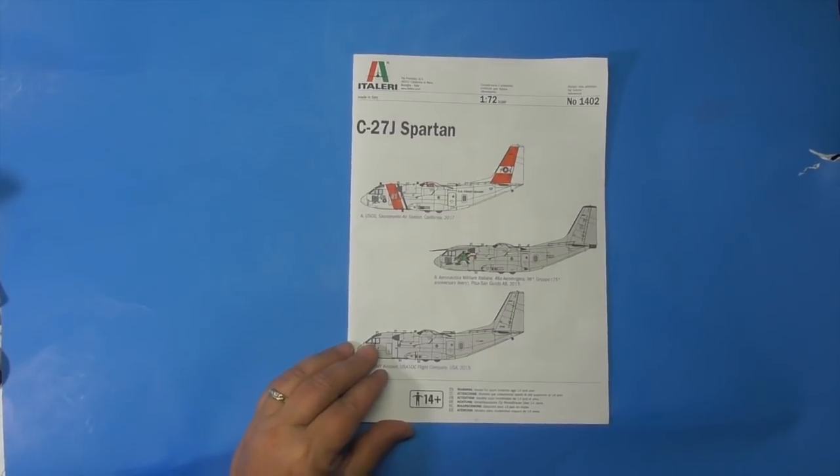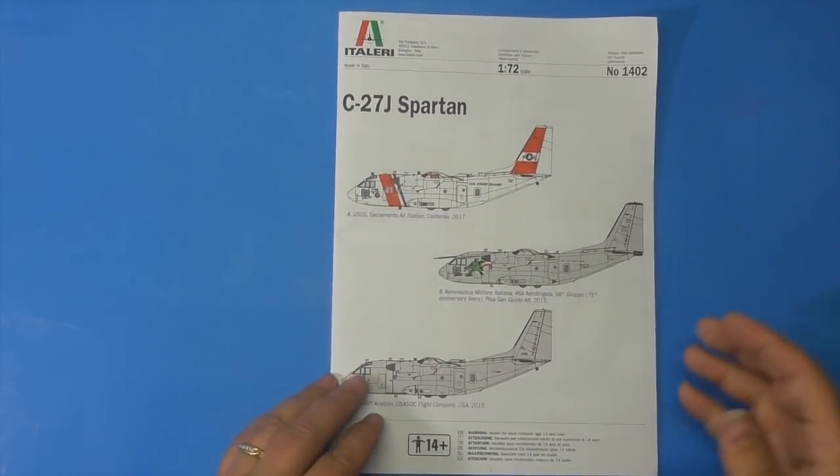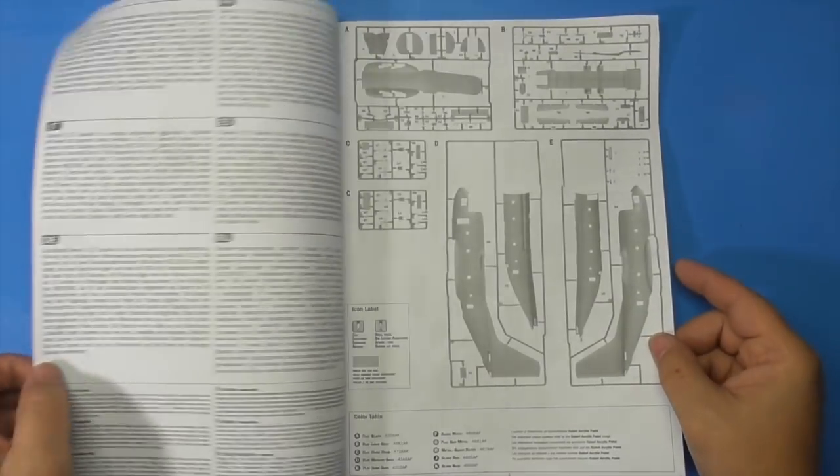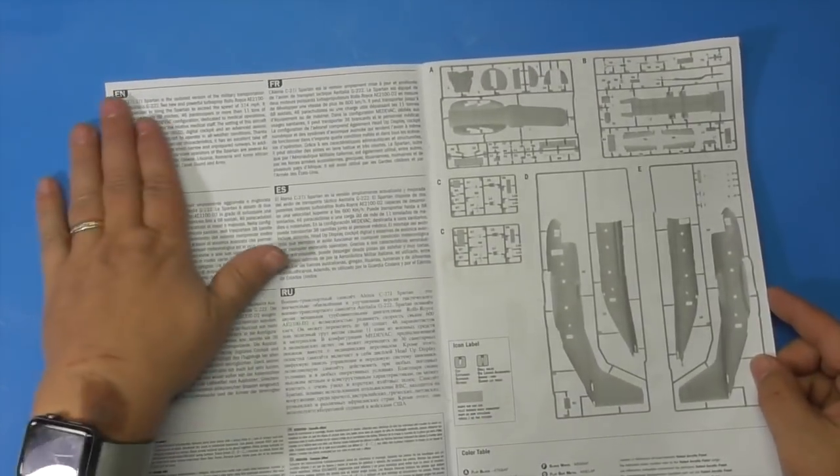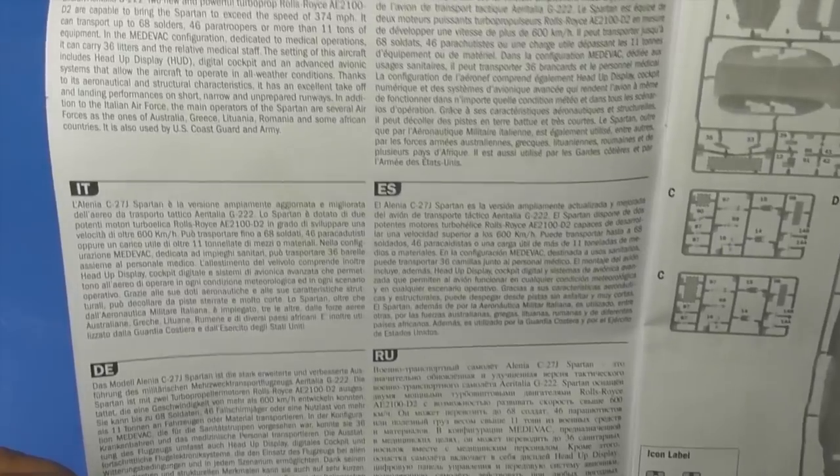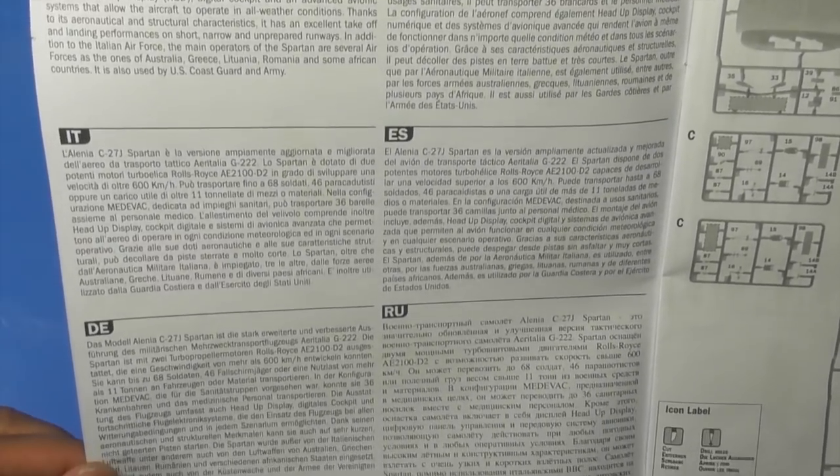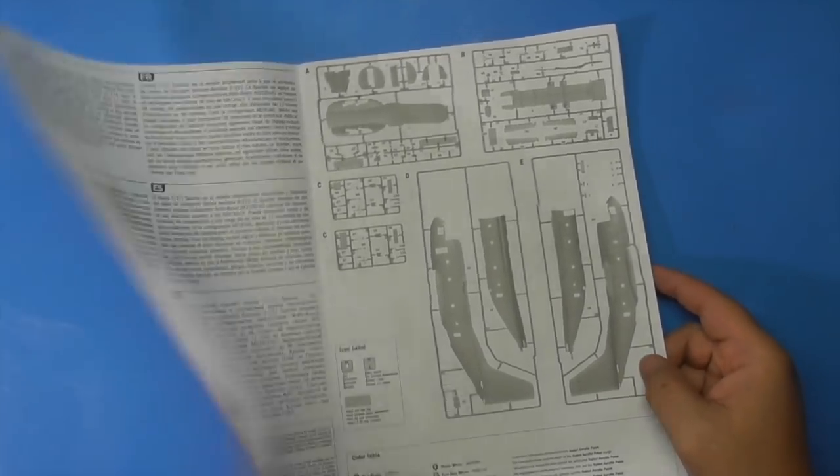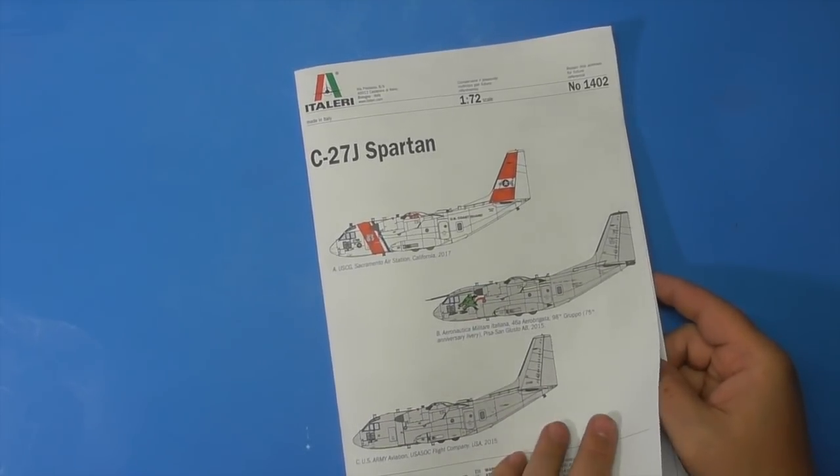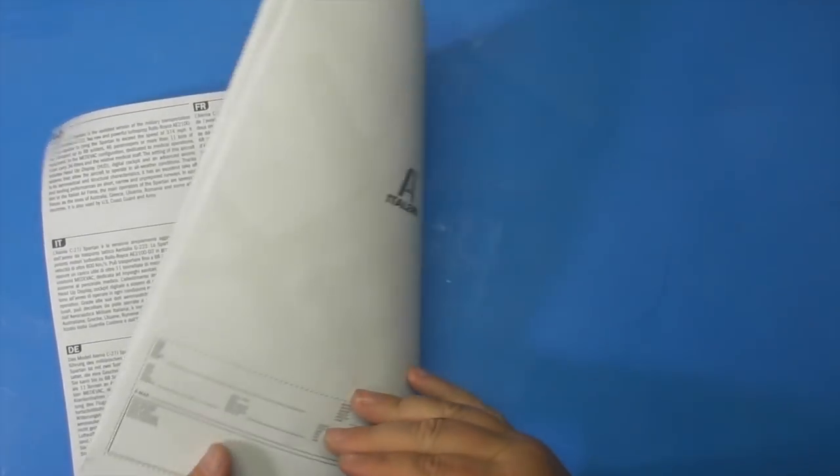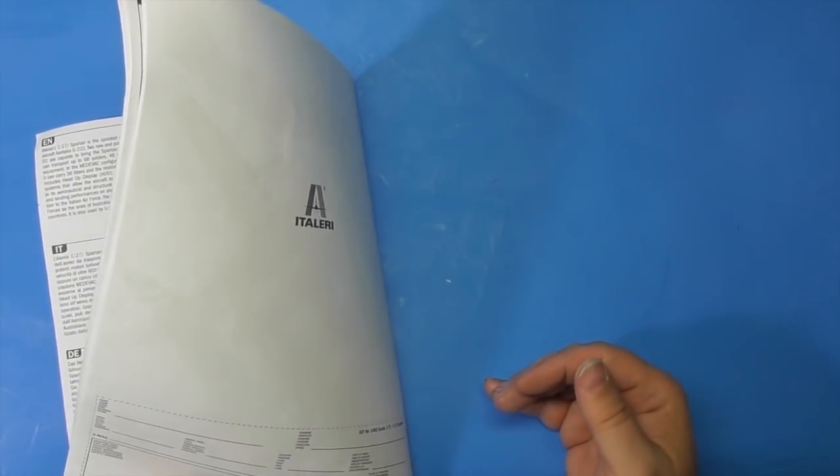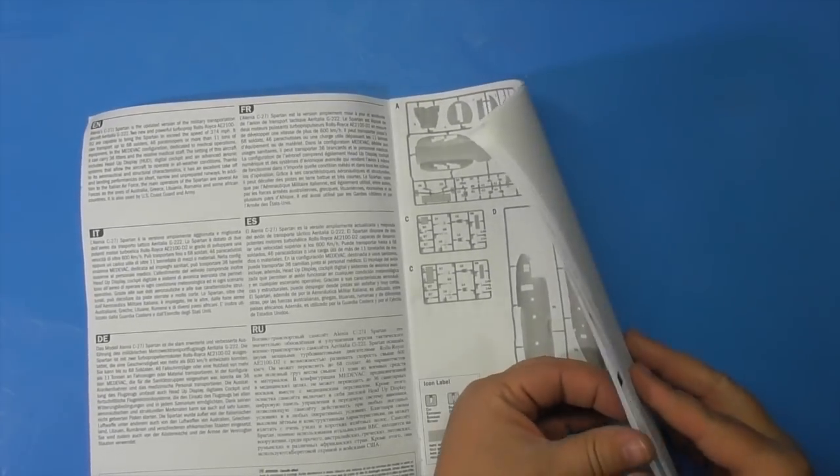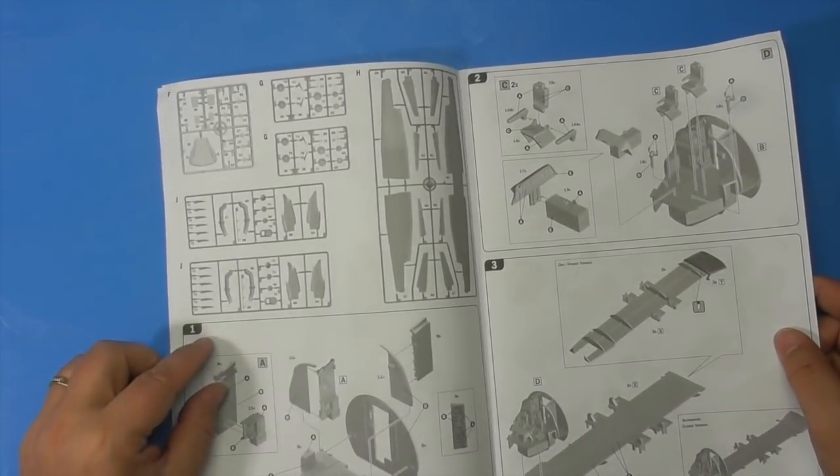There's our booklet. Color, at least for the front page. Little bit about the aircraft in multiple languages. Pick your language and pause it. Sprue map. I was just looking for copyright date on the booklet and don't see one. The only thing I've seen so far is 2017. There's more sprue map.